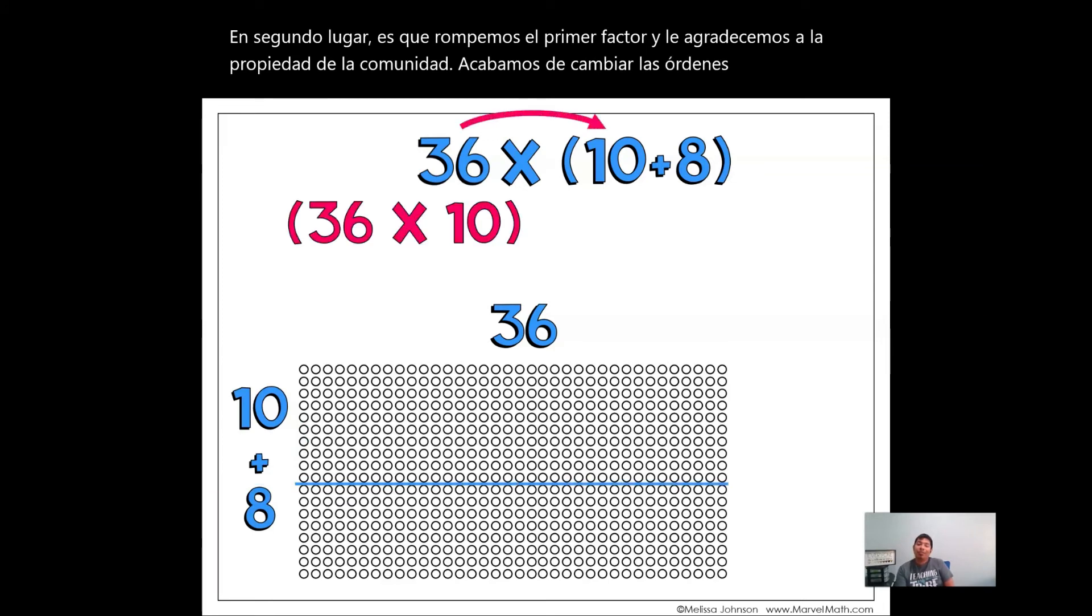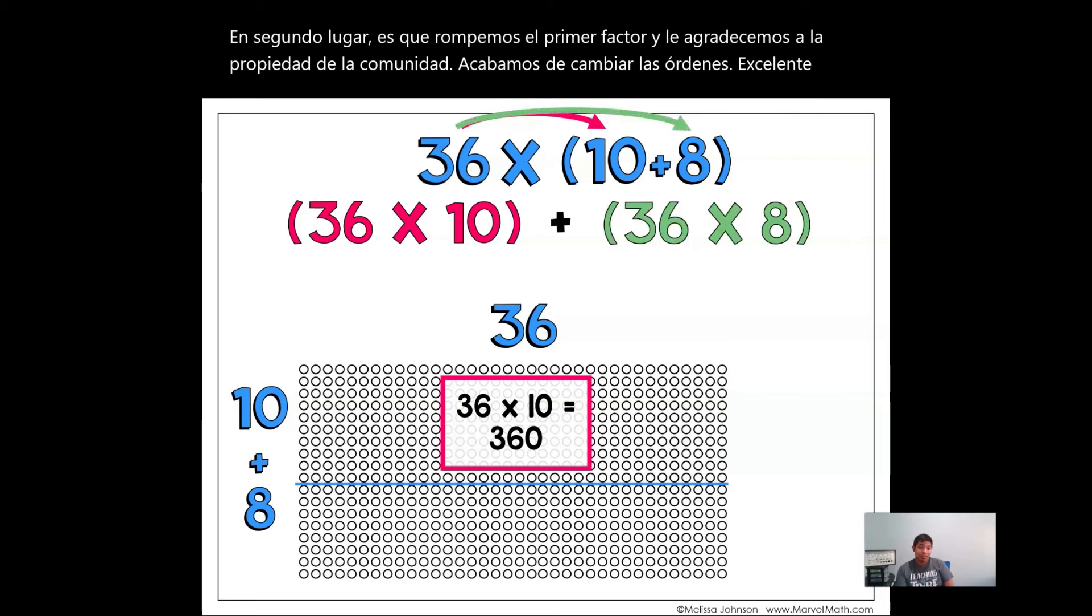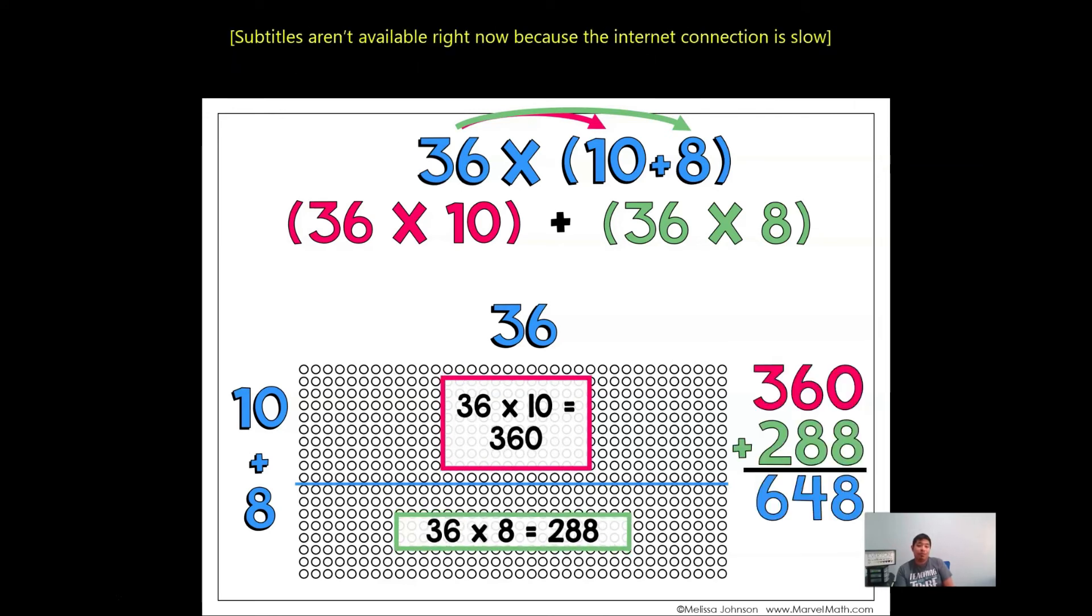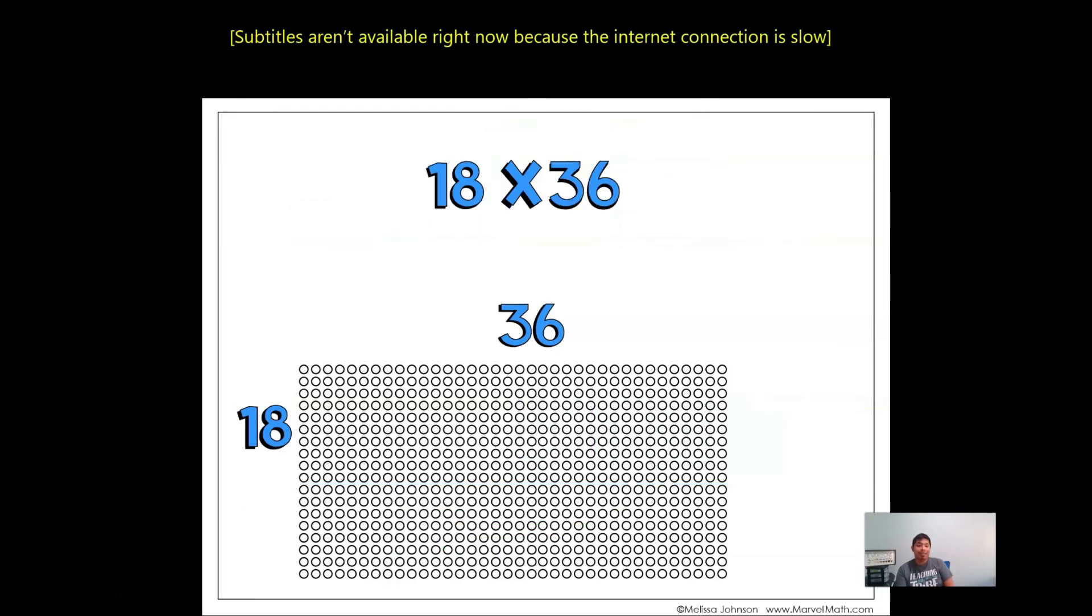Now we just multiply 36 times 10, which equals 360. Then 36 times 8, which equals 288. Now we add up both answers and our answer is 648. Still the same way.